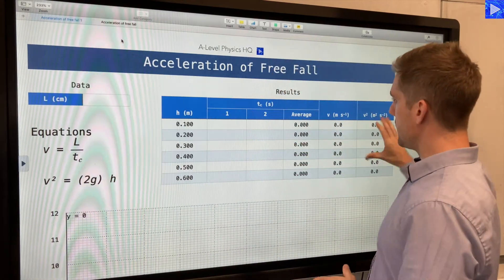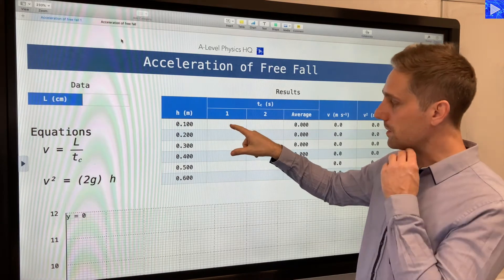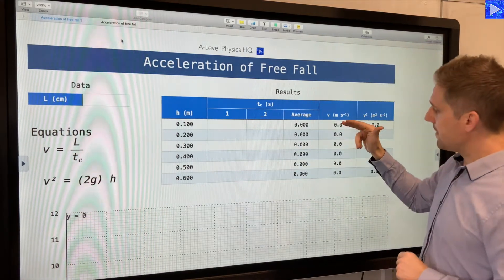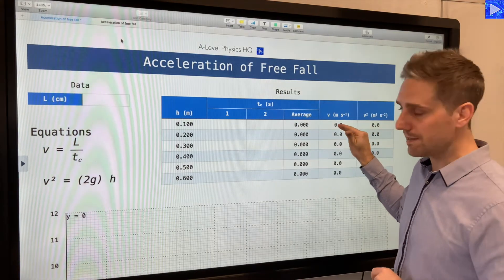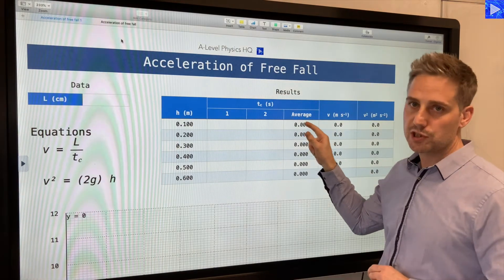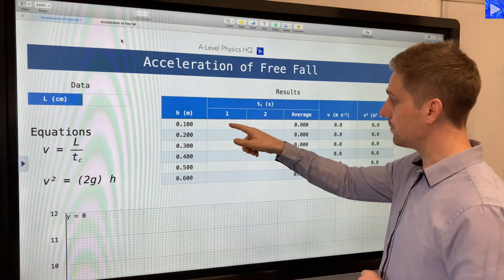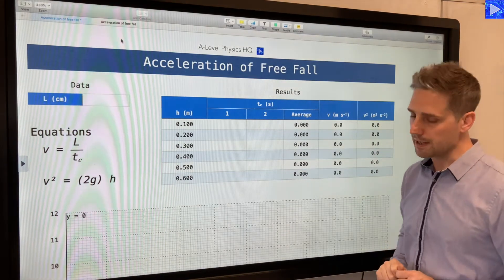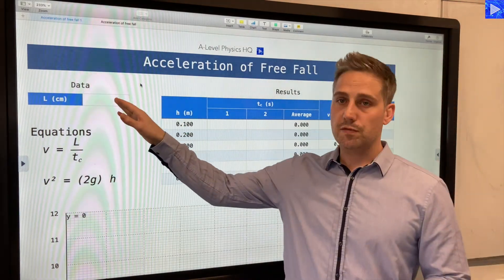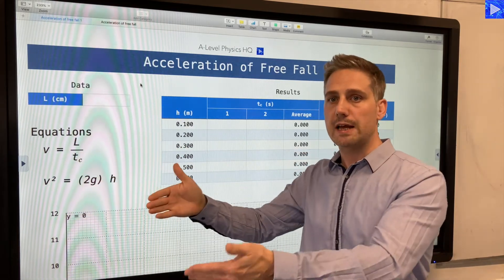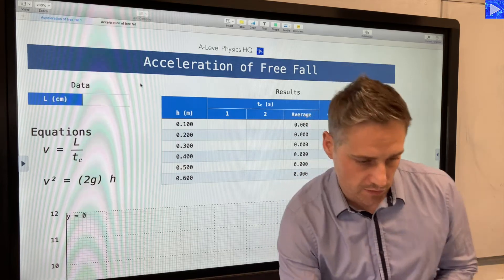Here's my table, and I'm going to be putting the Tc values in here for the repeat. This will automatically calculate the velocity of the card at that point based on the average Tc value for my repeat reading. Then over here I'm going to be squaring that. Let's put the length of card in here - that was 5 centimeters.